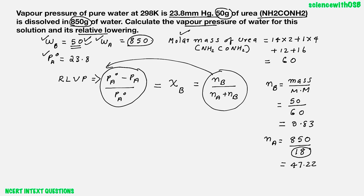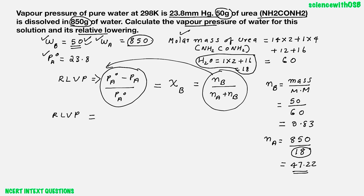Molar mass of water (H2O): hydrogen is 1, and there are 2 hydrogens, plus oxygen is 16. On adding, you get 18. So the relative lowering of vapour pressure is NB by (NA plus NB), which is 0.83 by (47.22 plus 0.83). On calculating, you will get 0.017.